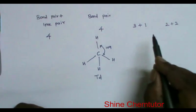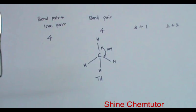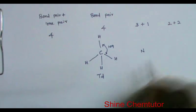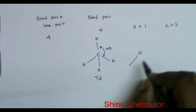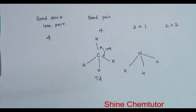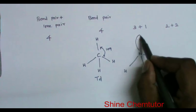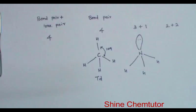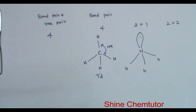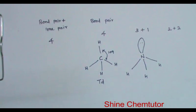When it is three bond pairs and one lone pair, the geometry remains the same — tetrahedral. Instead of one hydrogen, we place one lone pair. For example, considering nitrogen in place of carbon, the geometry is still tetrahedral with the lone pair occupying one position. But when considering only the bond pairs for the structure, this gives trigonal pyramidal.